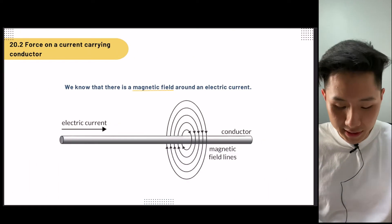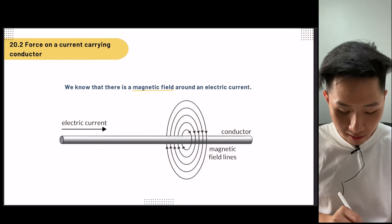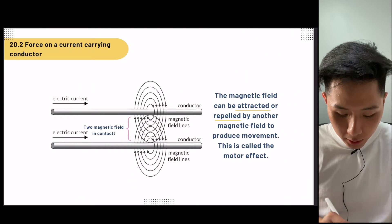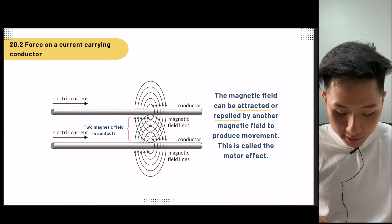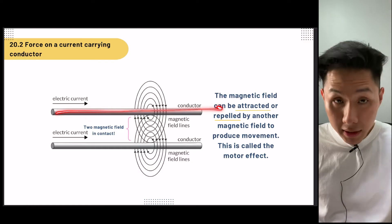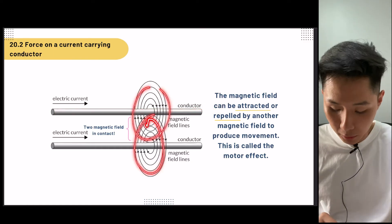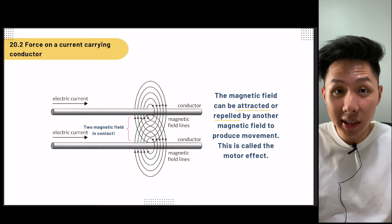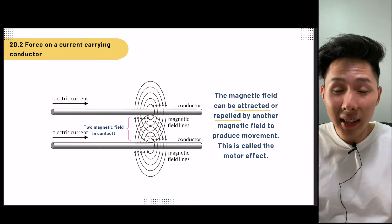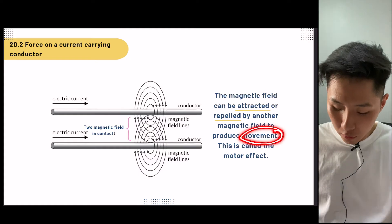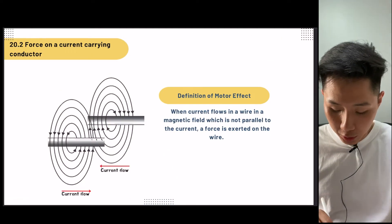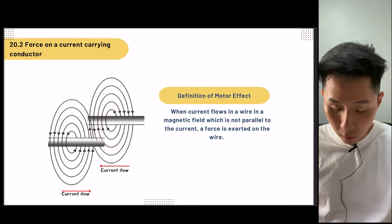We haven't talked about force yet, and now is the time. We know that a magnetic field is generated when there is a current flowing. What if we put two wires alongside each other and let the current flow? We can see that we have an interacting magnetic field. The interacting magnetic fields either attract or repel each other, just like what we learned in magnetism. This attraction and repulsion creates movement — in other words, it creates force. This is what we call the motor effect. The definition: when current flows in a wire in a magnetic field that is not parallel to the current, a force is exerted on the wire.